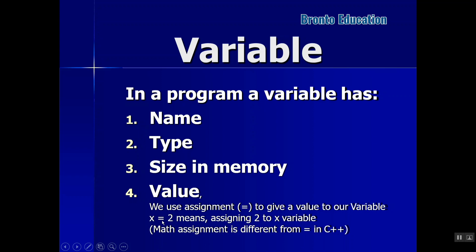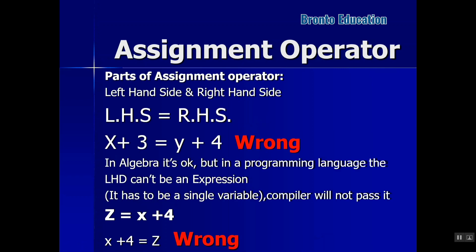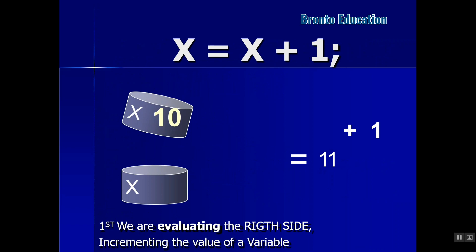We use the assignment operator (=) to give a value to a variable. x = 2 means assigning 2 to x — assignment is different from equivalency. The left-hand side must be a variable name; the right-hand side can use variables or numbers. In algebra it's different, but in programming the left-hand side cannot be an expression. So x = x + 4 is correct, but x + 4 = z is wrong. x = x + 1 means: if x was 10, x becomes 11.